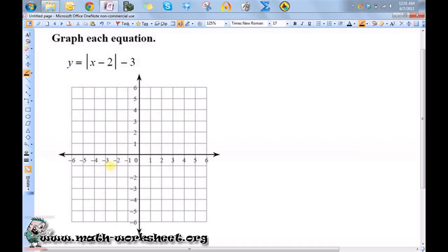Whenever you're graphing an absolute value function, if the function within the absolute values is linear, then you're going to have a V.